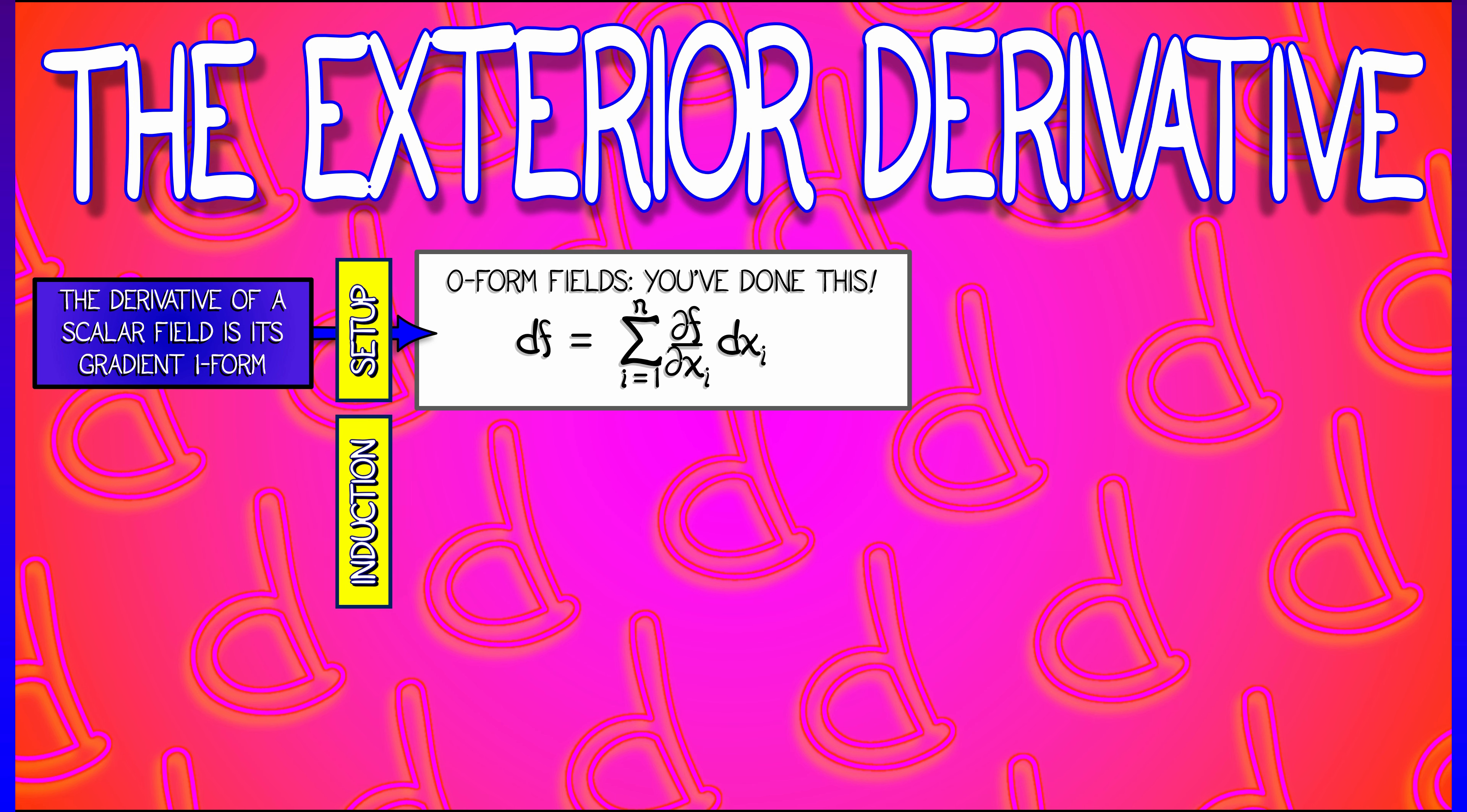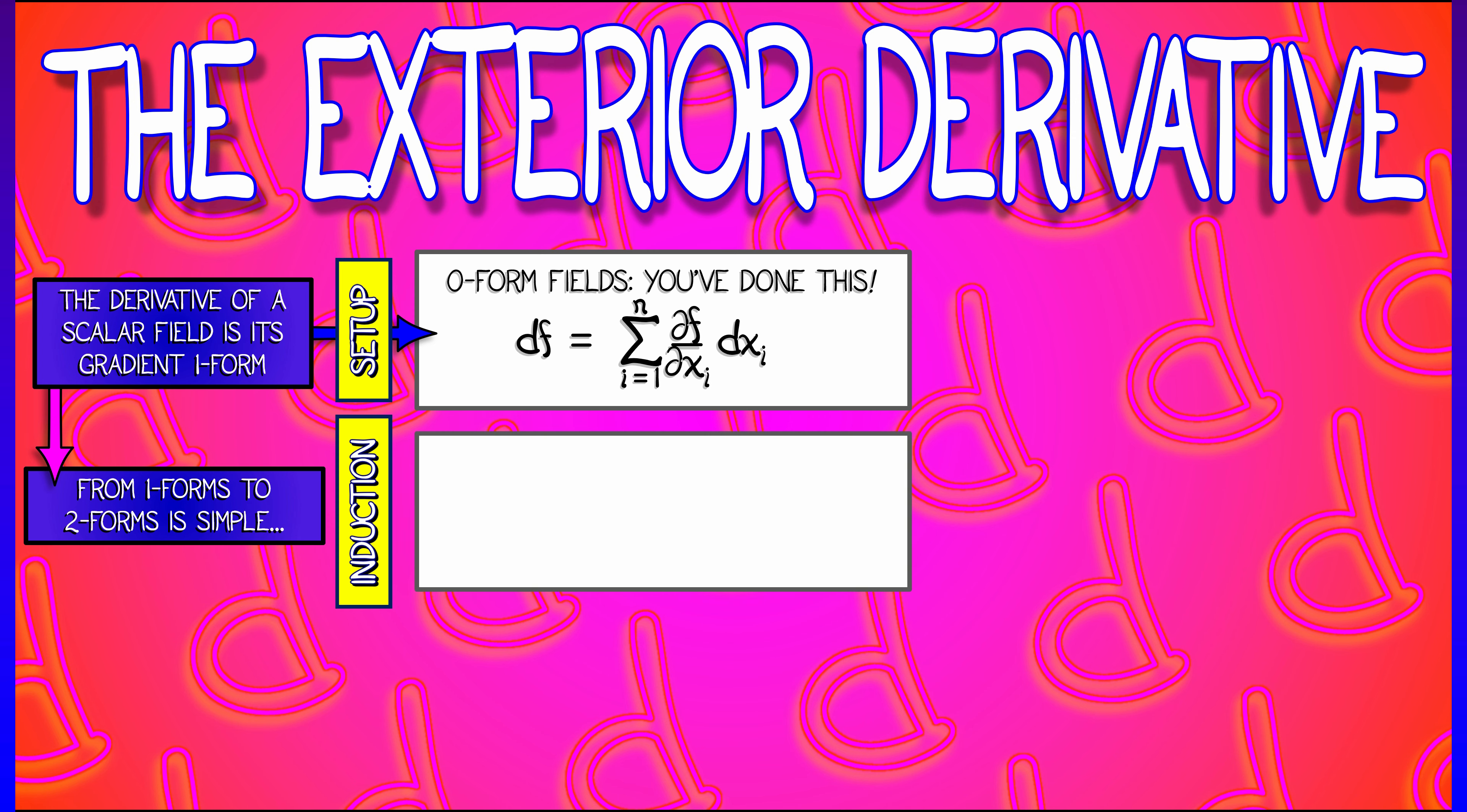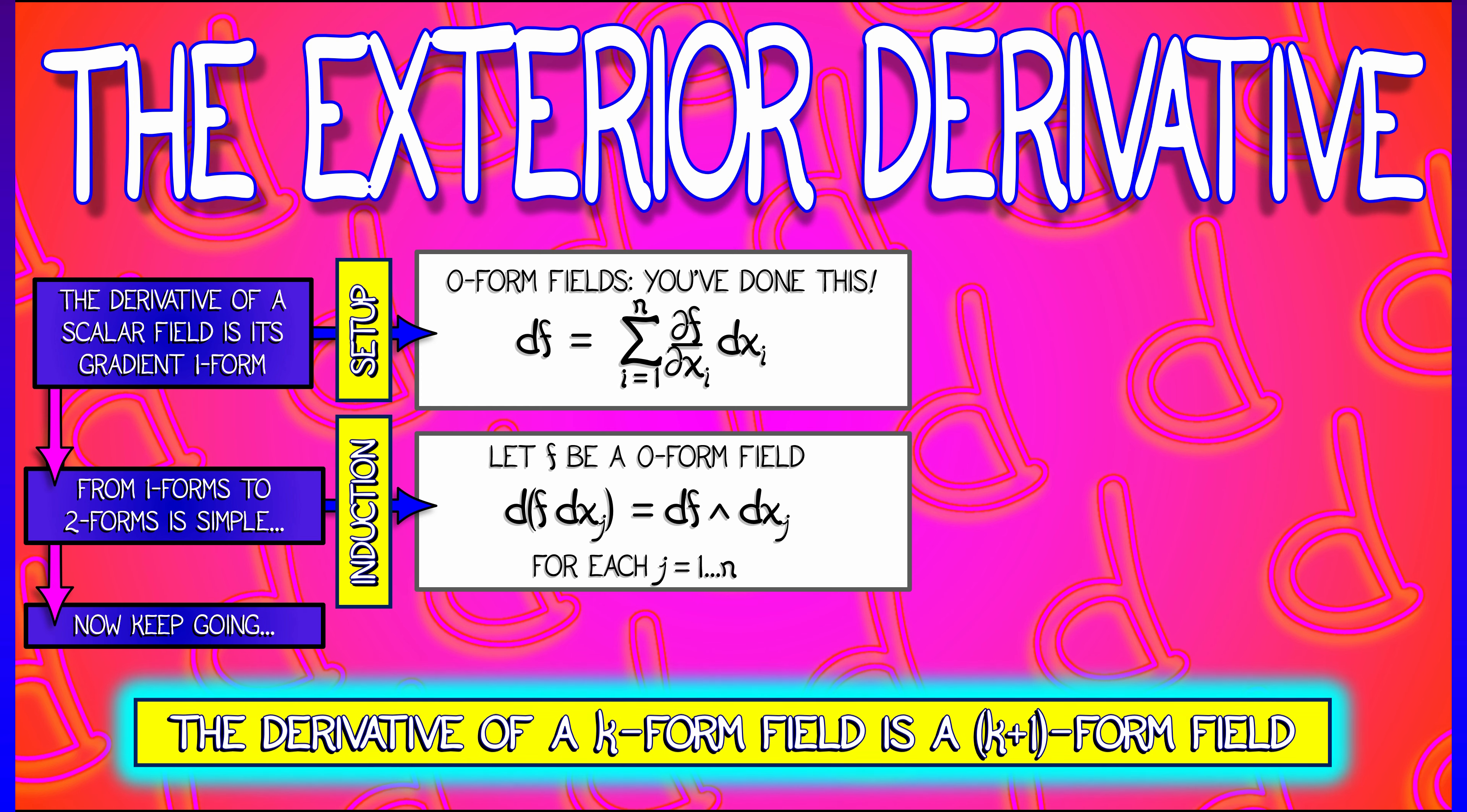Let's induct and consider going from one-forms to two-forms. This also won't be so bad. If f is a scalar field and I look at the one-form f dxj, then its derivative is given by df wedge dxj. This holds for any j from 1 to n, and that is going to be the basis, so to speak, for how we define the exterior derivative in general, inductively.